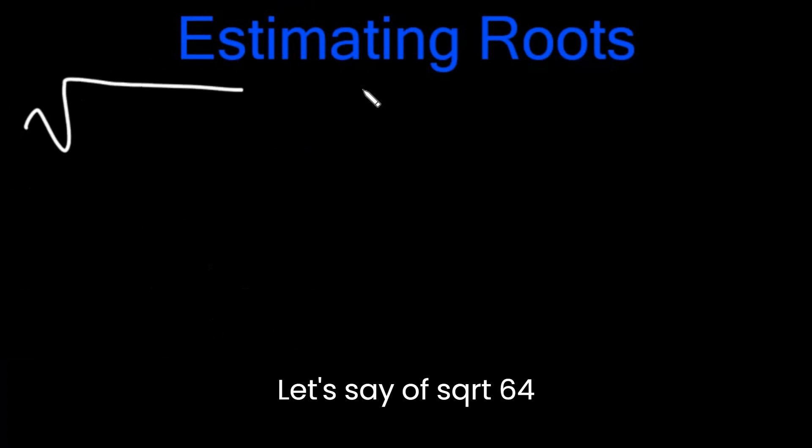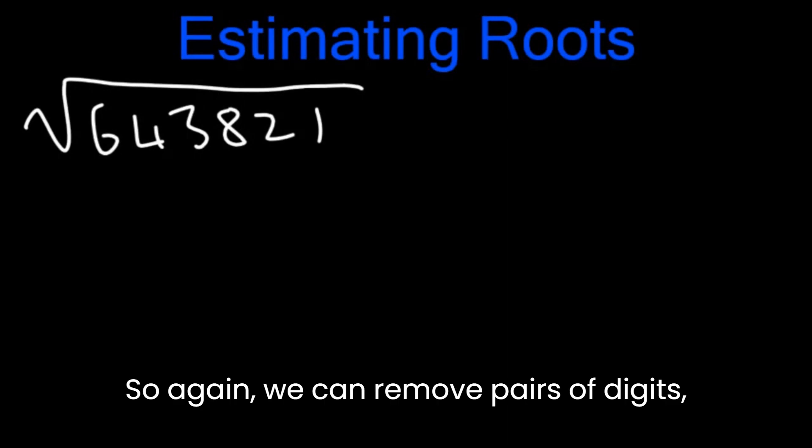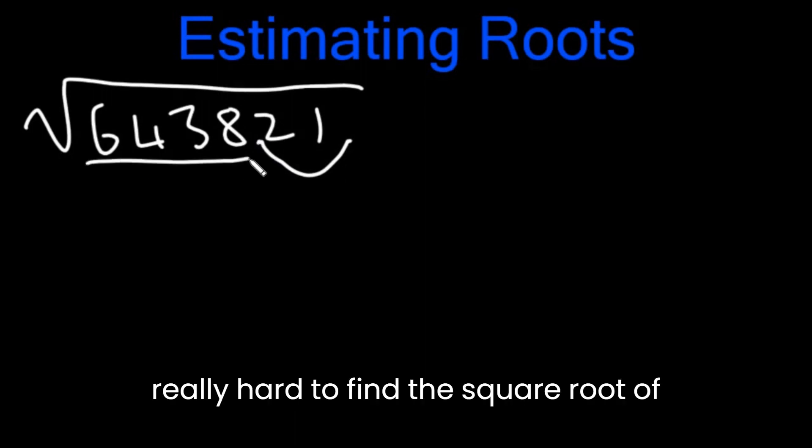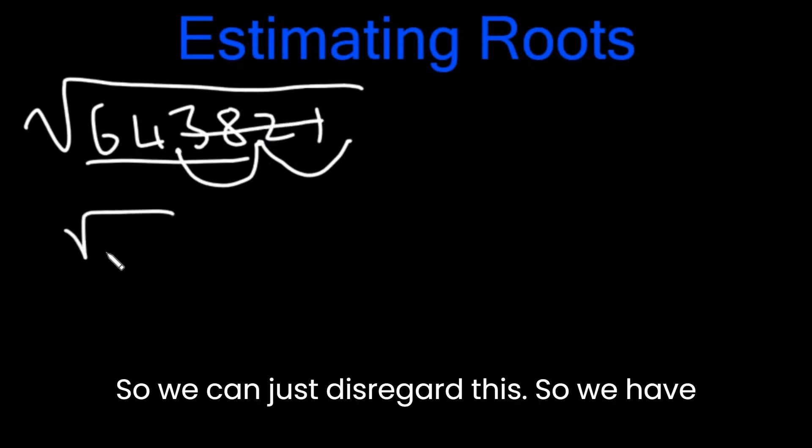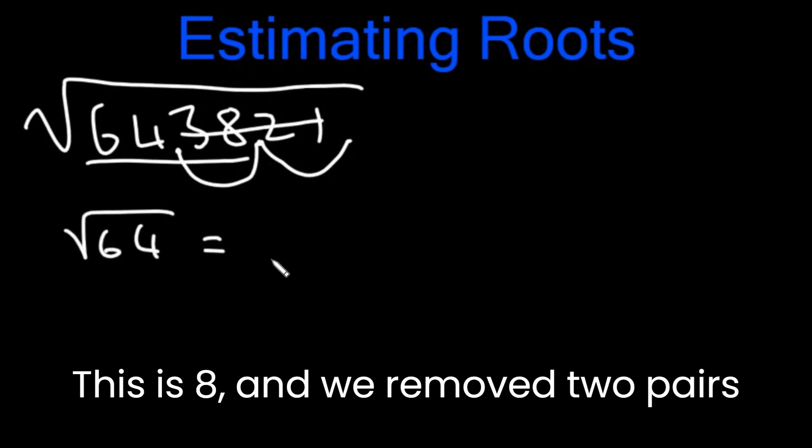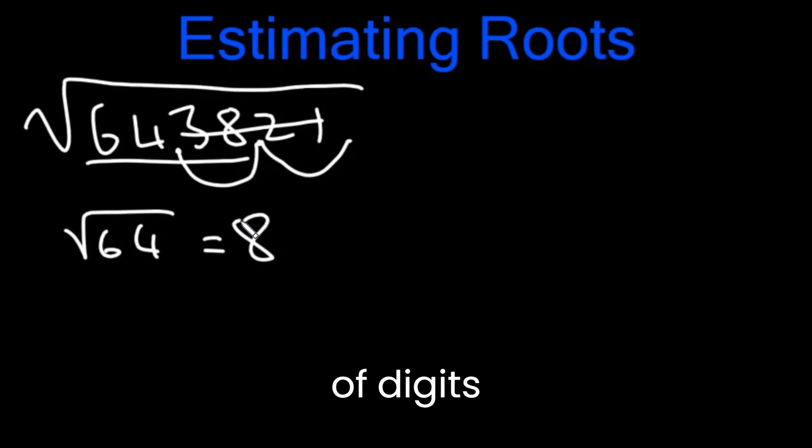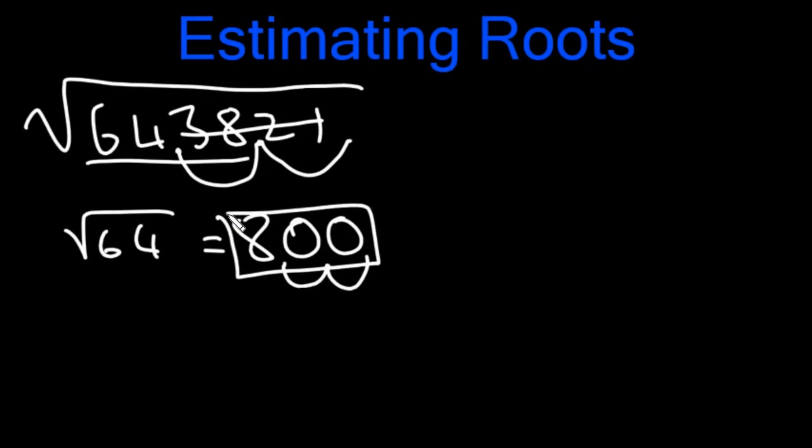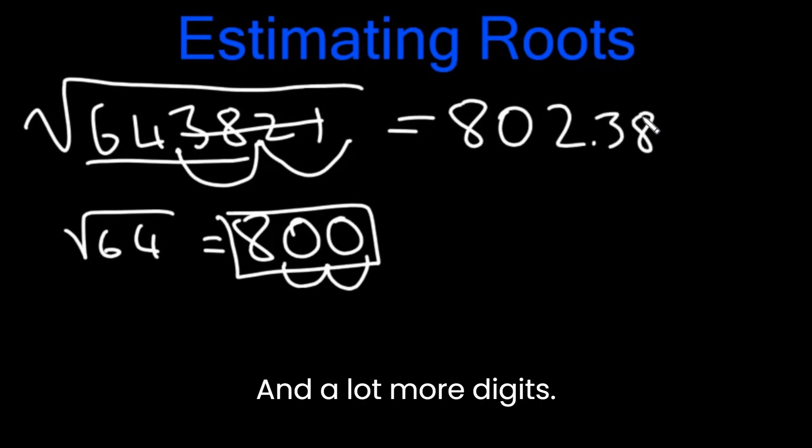Let's look at another example. Let's say we have square root of 643821. Again, we can remove pairs of digits. We can remove one pair, and it's really hard to find the square root of that. So let's remove another pair. We can just disregard this. So we have square root of 64. This is 8, and we removed two pairs of digits, so we're going to add two zeros. That basically means I moved the decimal place twice. So our answer is 800.